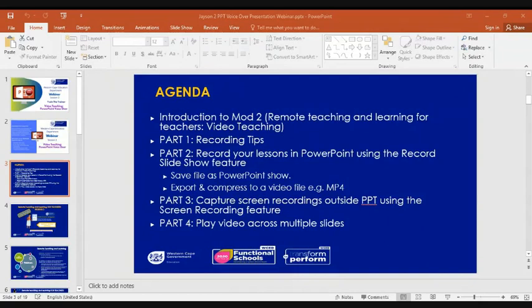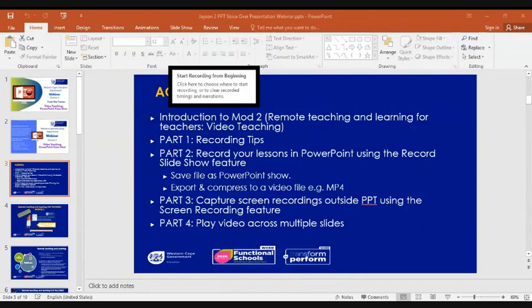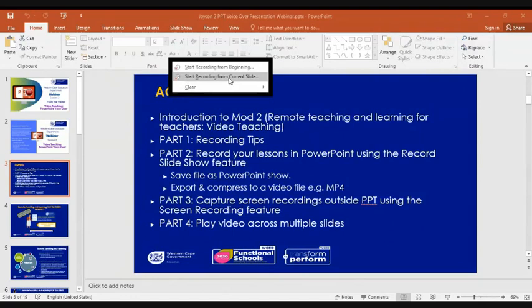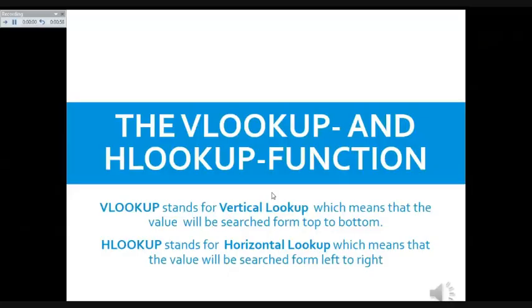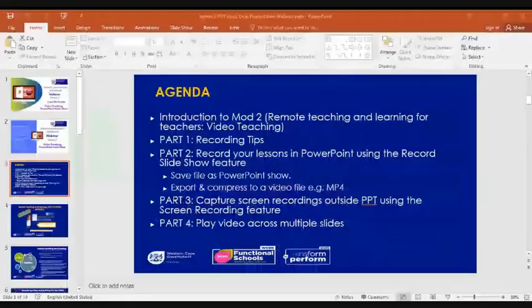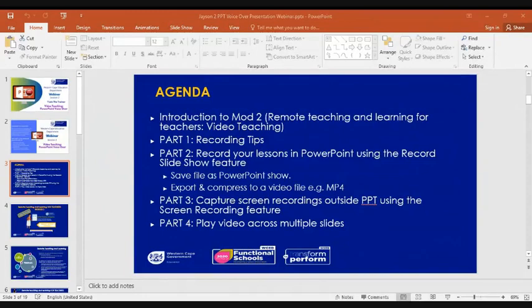If you made a mistake on a specific slide and want to re-record it, go to the Slideshow tab and select Record Slideshow, then choose Start from Current Slide. Keep the default settings as they are and press Start Recording — now you can record only over that specific slide. Press Escape to go back to edit mode, click the sound icon, and you will hear only that specific re-recorded slide.